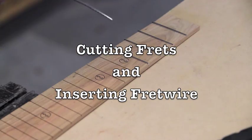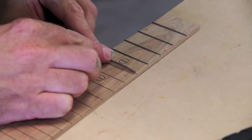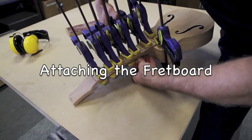In this video I'll show you how to use a jig to cut your fret slots, insert the wire, as well as attach your fretboard to the ukulele.